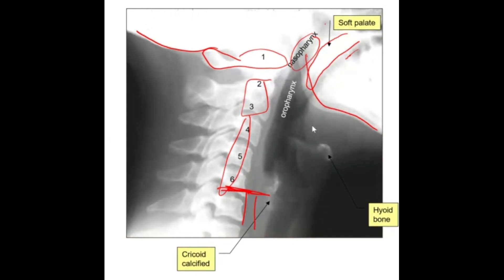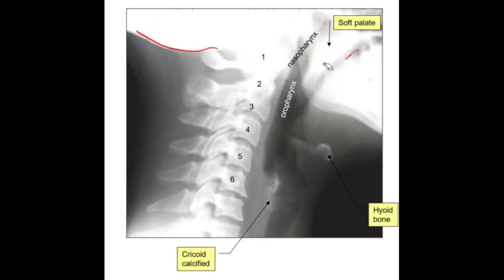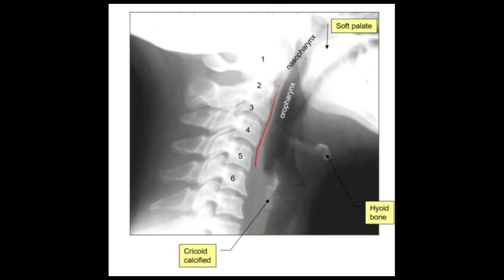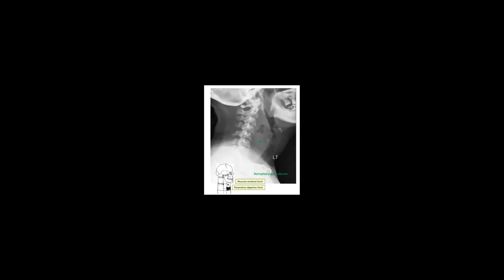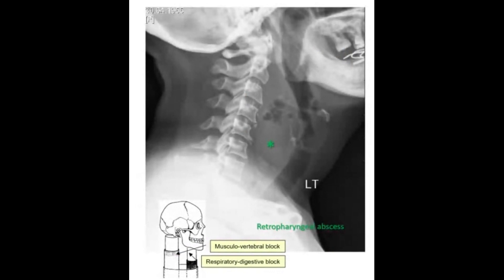Now behind the pharynx there is a soft tissue space — it's a potential space. In fact it's not empty because it's filled with loose connective tissue and lymphatics. This area is called the retropharyngeal space. It is a potential space that can expand when there is infection.